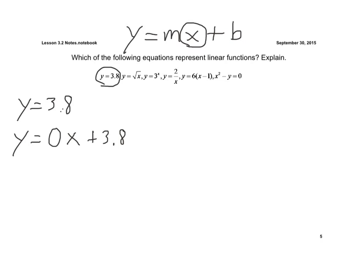The next one, y equals the square root of x, is not linear — it's the square root of x. Here, the variable x is the exponent, so again, not linear. And here, the variable x is in the denominator. If I try to move it to the numerator, it becomes x times y equals 2, which cannot be written in the form y equals mx plus b. So that's not a linear function.